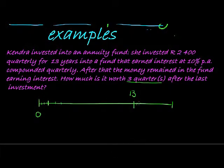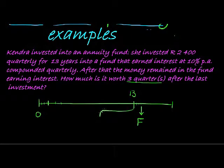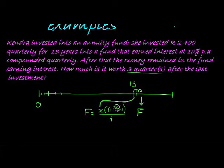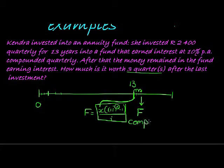She makes quarterly investments — four times every year — and after the 13 years there's another three quarters. The question is: what is the future value at that final time? We can calculate the future value at time 13 using the normal annuity formula: FV = X × [(1 + i)^n − 1] / i. Then we take that answer and compound it for three more time periods, since investments stopped but interest kept earning.